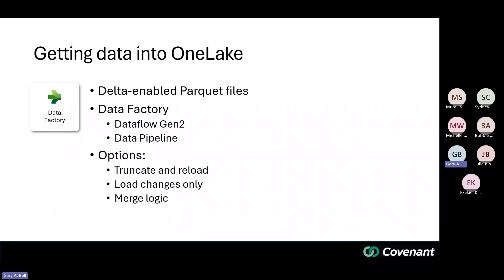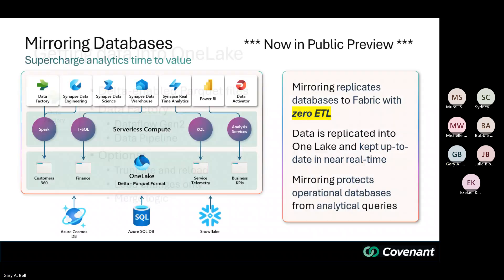So those are some of the challenges. You can kind of see where we're headed in terms of mirroring, which could potentially solve a lot of these issues. Mirroring in SQL Server — this is in public preview and has been out for a few months. The promise here is that you can connect your source database. Currently there are three options: Azure SQL database, Snowflake, or Azure Cosmos DB, and we'll talk about other options here in a bit.